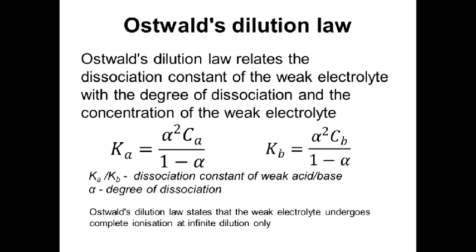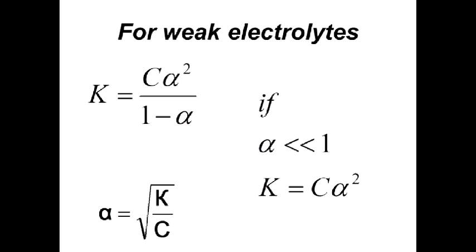Ostwald's dilution law states that there is a relation between the dissociation constant and degree of dissociation, and that weak electrolytes may dissociate nearly completely only in very dilute solutions. If alpha is much less than 1, we can use the formula K = cα² to calculate the dissociation constant, and α = √(K/c) for the degree of dissociation.